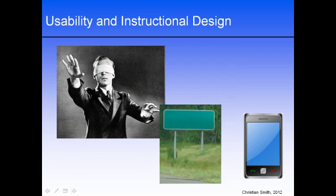Now imagine that you were blindfolded and randomly guided into the grocery store by a friend. Pretend that they dropped you off right into the middle of an aisle, then pulled off the blindfold and asked you to identify where you were. Without any visual cues, such as a sign or aisle descriptions posted, you would likely have a difficult time identifying where you were located. You would probably be able to discern that you were in a grocery store and have a general idea of what section, but that would be the extent of your orientation.